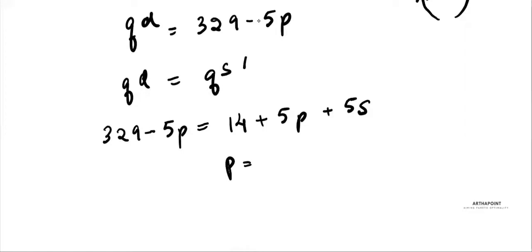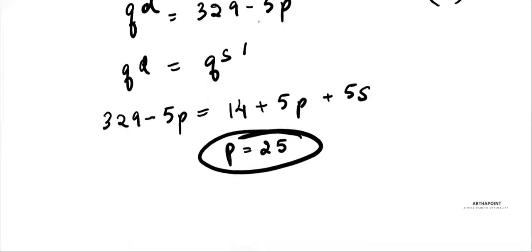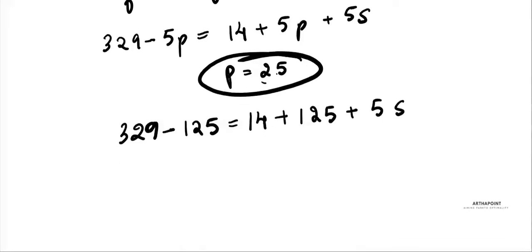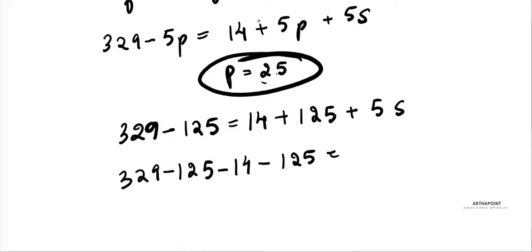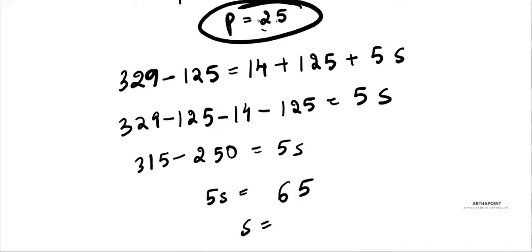Substituting p equals 25: 329 minus 125 equals 14 plus 125 plus 5s. So 204 equals 139 plus 5s, giving 315 minus 250 equals 5s, so 5s equals 65, meaning s equals 13. The government will offer a subsidy of rupees 13 per unit.